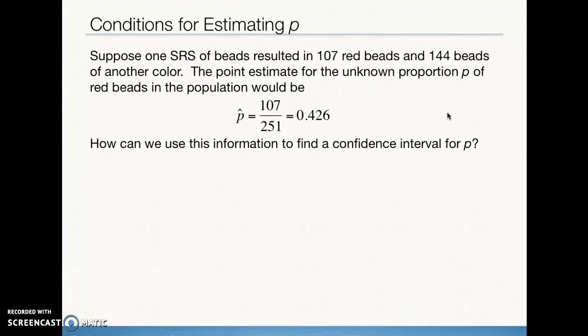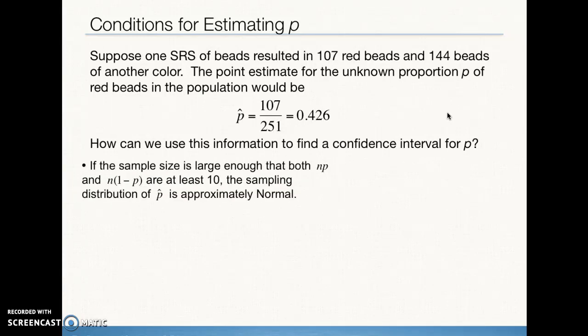This is a binomial setting, fitting all the characteristics from Chapter 6. We also learned about the normal approximation to the binomial: if our sample size is large enough that NP and N times (1 minus P) are both at least 10, then the sampling distribution of all p-hats is approximately normal.